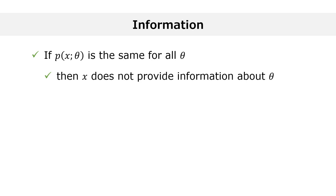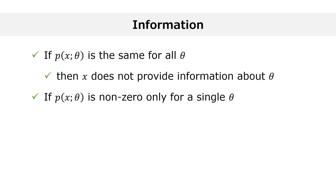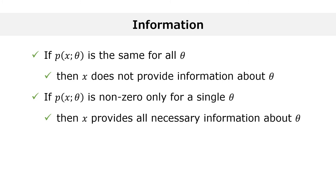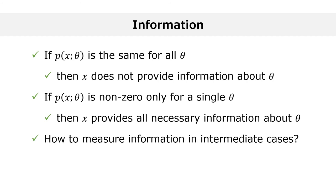How much information do the data x provide about the parameter theta? Let us discuss two extreme cases. In the first case, if the probability of observing x is the same for all theta, then clearly x does not provide any information about theta — all the parameters are equally likely to have generated x. In the second case, if the probability of observing x is non-zero only for a single value of theta, then x provides all the information needed to uniquely pin down theta. There is only one parameter that could have generated x.